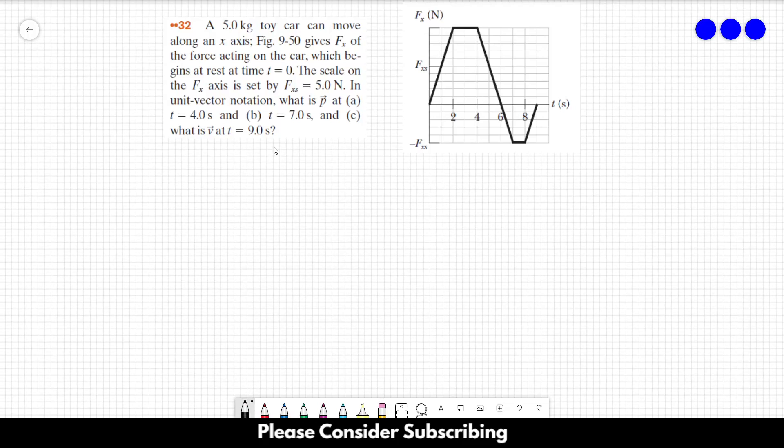Number 32, a 5kg toy car can move along an x-axis. This figure here gives fx of the force acting on the car which begins at rest at time t equals 0. The scale on the fx axis is set by fxs equals 5 newtons. In unit vector notation, what is vector p at letter a, t equals 4 seconds, b 7 seconds, and c 9 seconds.